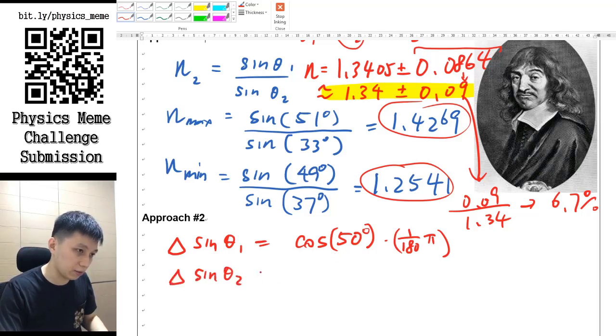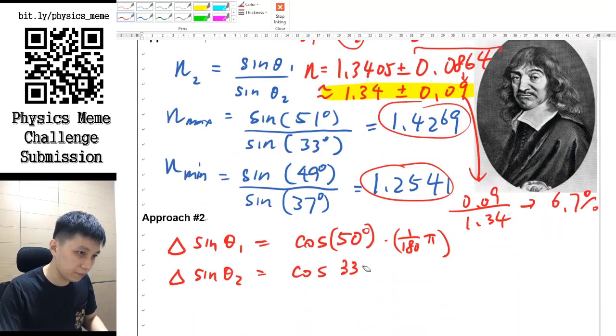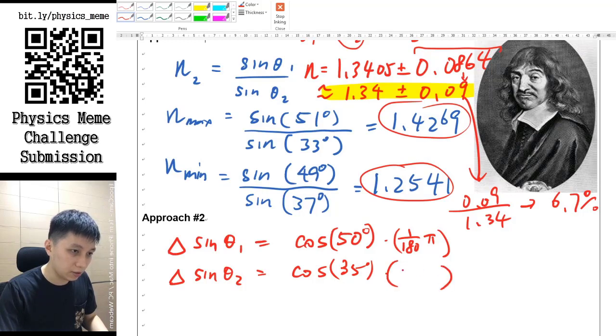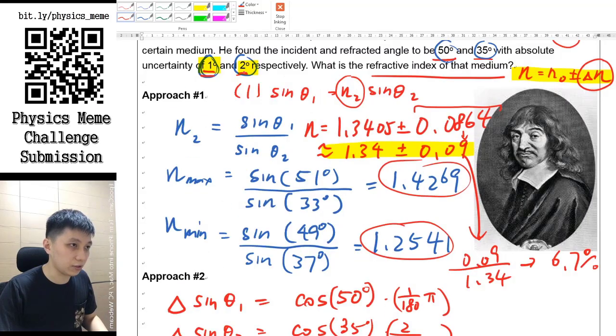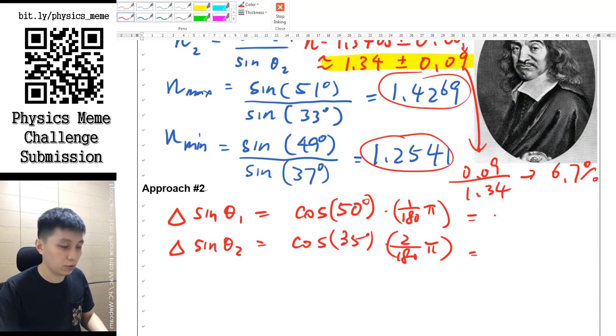35 degrees times - because that will be 2 degrees of uncertainty according to the scenario that I set. Then this will be the uncertainty, so we can actually calculate that first.